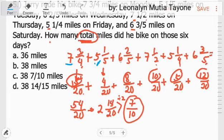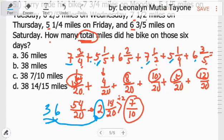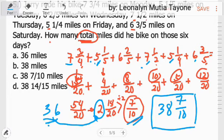Balikan natin yung mga whole numbers. 7 plus 5. So, 2, 8, 5, 20, 6, 1, 2, 3, 36. So, yung whole numbers natin ay, ang total niyan ay 36. 36 plus 2. Kasi sa mga fraction mo, nakabuo ka ng dalawang whole numbers. Which is 2. 36 plus 2, that is 38. At yung fraction mo na 7 over 10. So, ang answer dito ay, 38 and 7 over 10 miles. Letter C.